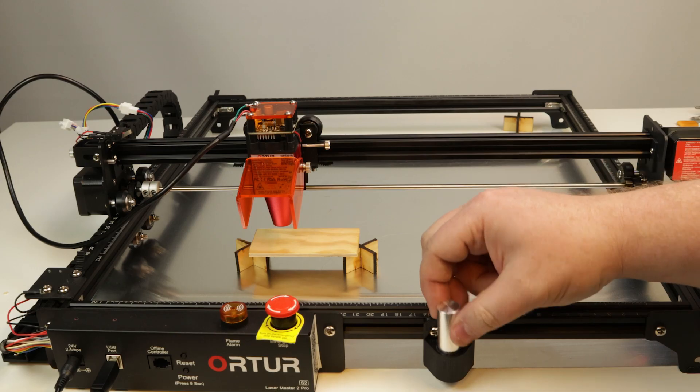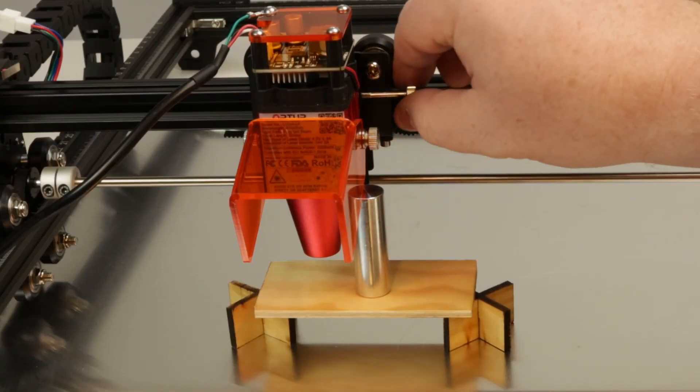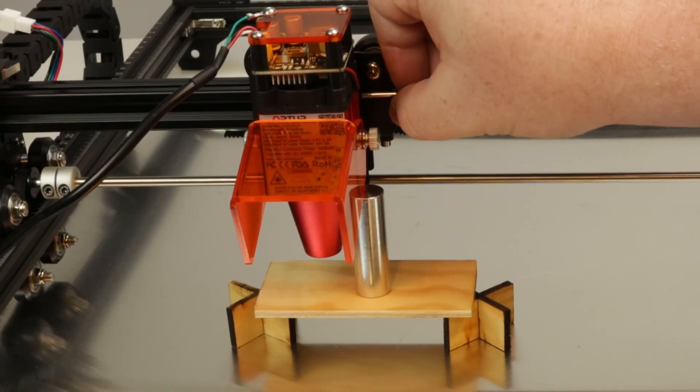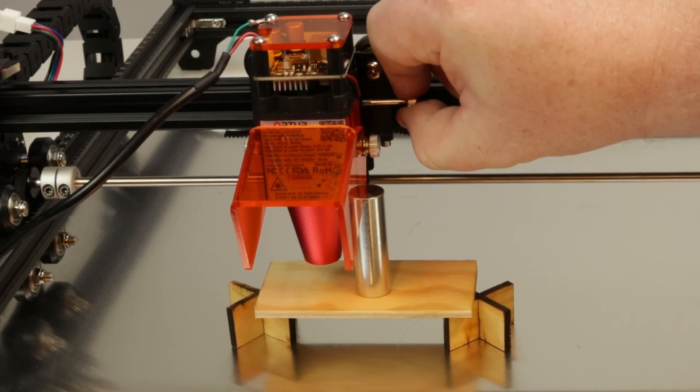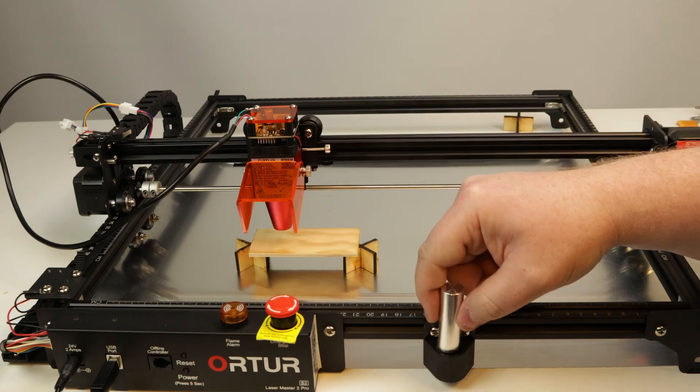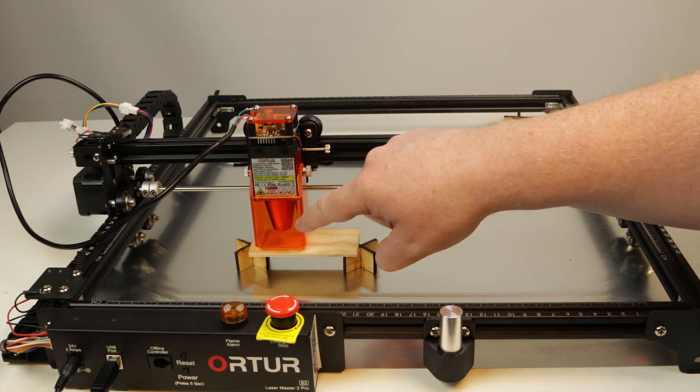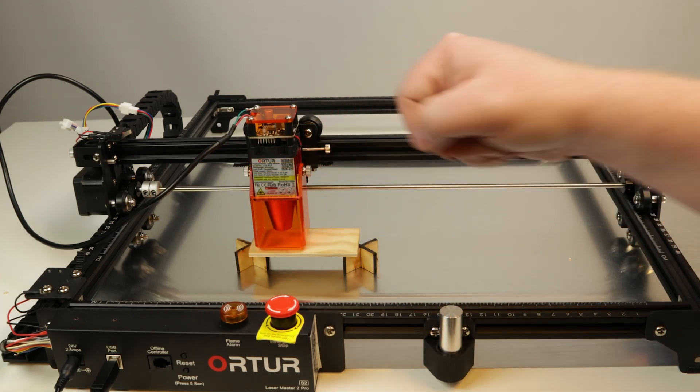Before you start cutting or engraving, you must always adjust the focus of the laser. This is simply done with the supplied distance gauge. Just place the gauge on your material and lower the laser before tightening the thumb screw. This is one of the easiest focusing systems out there.